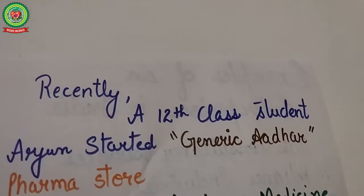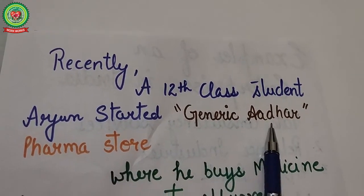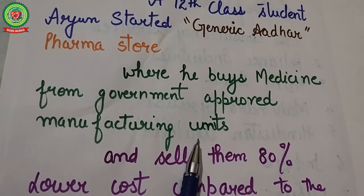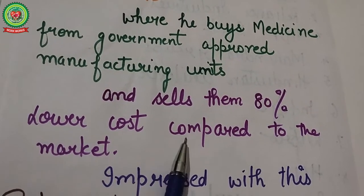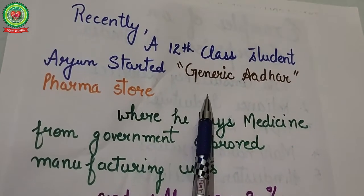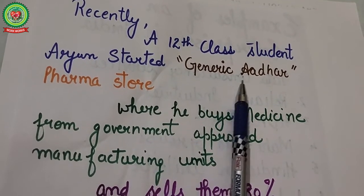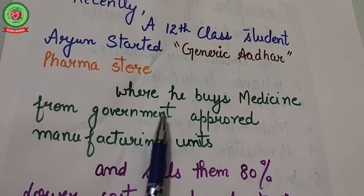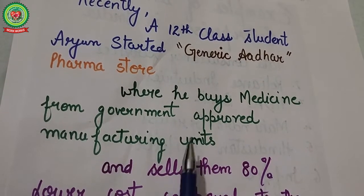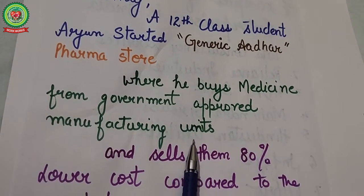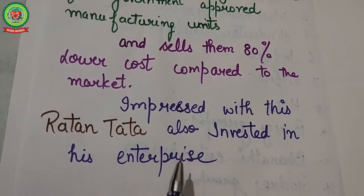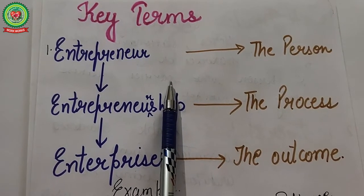Recently, a 12th class student Arjun started a Generic Adhar Pharma Store, where he buys medicine from government-approved manufacturing units and sells them at 80 percent lower cost compared to the market. So we can say that it is an enterprise he started, named Generic Adhar. We can say that an enterprise is a business, company, or organization that runs in the market to provide goods and services to customers. Impressed by this, certain investors also invested in his enterprise.